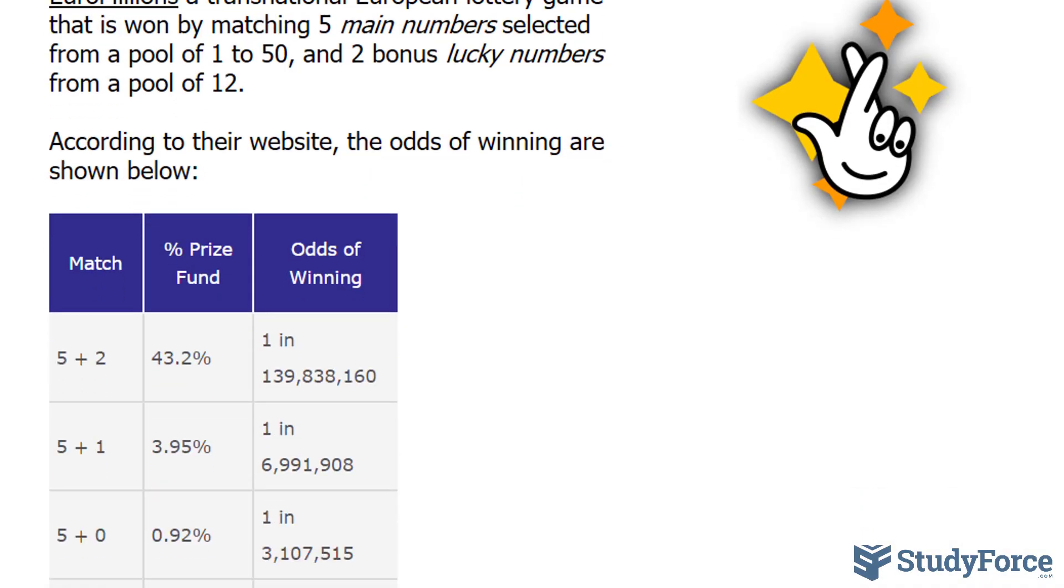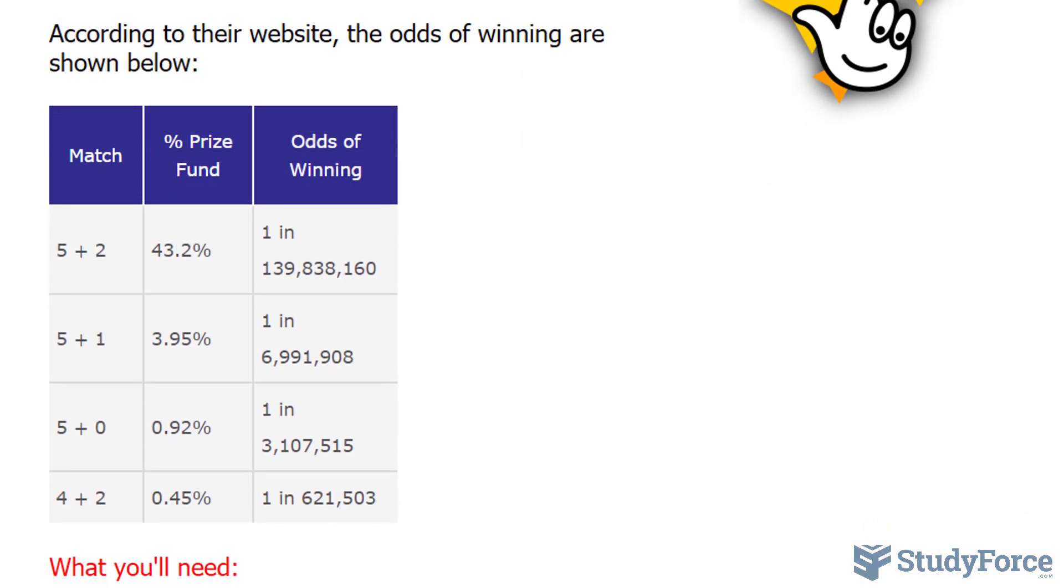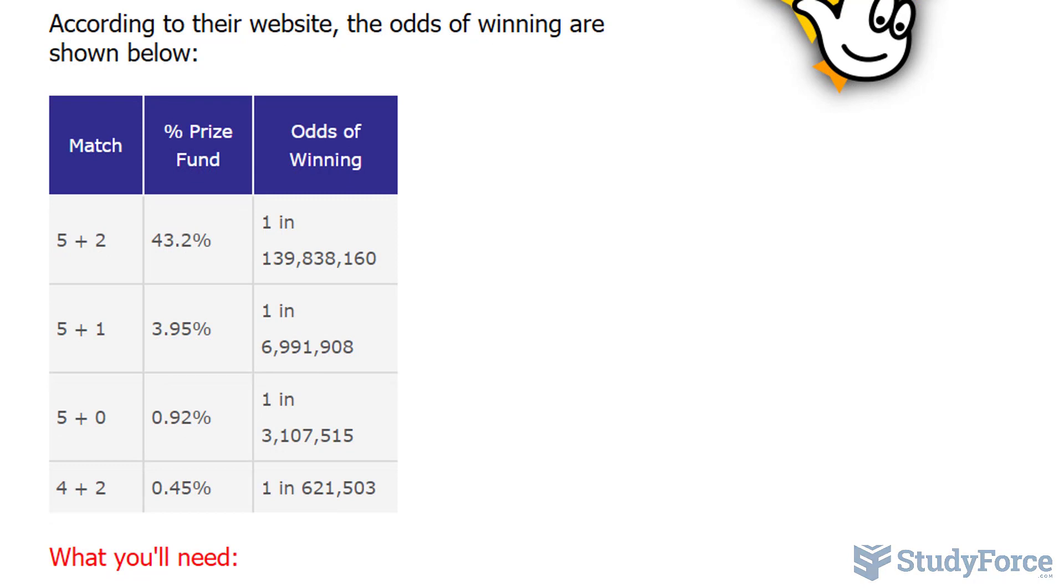According to their website, the odds of winning are shown on your screen. This video will specifically show you how to find the odds for this combination: 5 plus 2, 5 plus 1, and 4 plus 2. So let's get started.